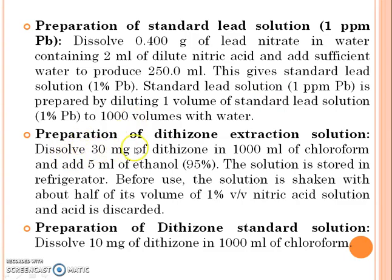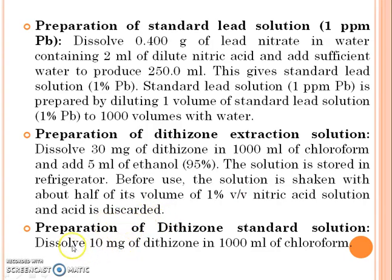Preparation of dithizone extraction solution: Dissolve 30 mg of dithizone in 1000 ml of chloroform and add 5 ml of 95% ethanol. Store the solution in a refrigerator before use. Shake the solution with about half its volume of 1% v/v nitric acid solution and discard the acid layer. Preparation of dithizone standard solution: Dissolve 10 mg of dithizone in 1000 ml of chloroform.